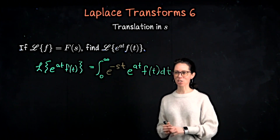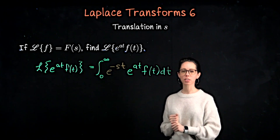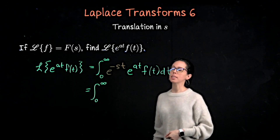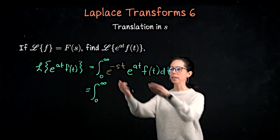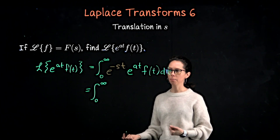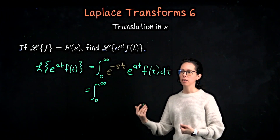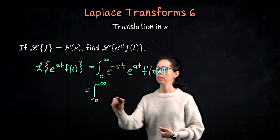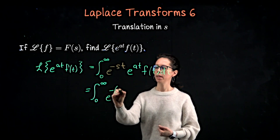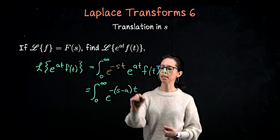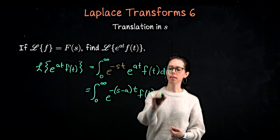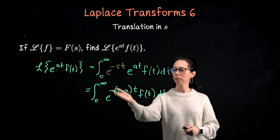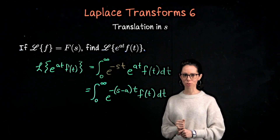What we're going to do is take this product of exponentials and turn it into one exponential. So this is the improper integral from 0 to infinity, and I need to add what we are exponentiating together: negative st plus at. So we can factor out a t, and write negative s minus a times t, f of t dt. You can check we get negative st plus at — that is the combination of those two exponential functions.